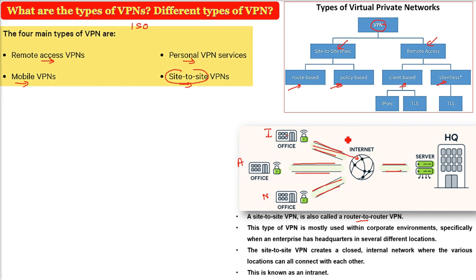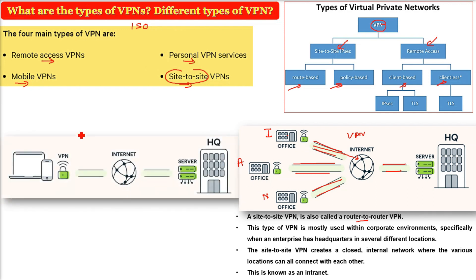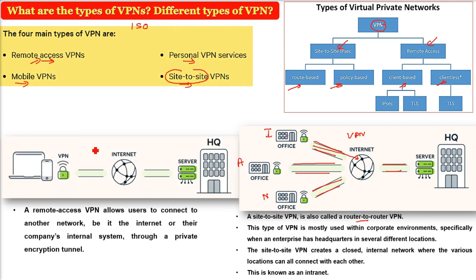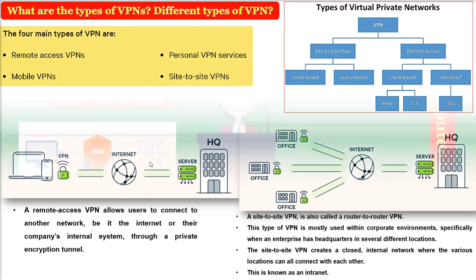This is also called an intranet — you are using a VPN on the layer of openness to make a layer of closeness. Then we have remote access VPN, which allows the user to connect to another network — it can be the internet or their company's internal system — through a private encryption tunnel.